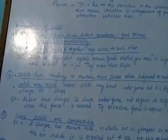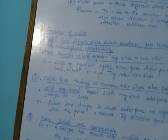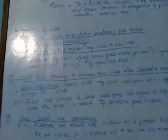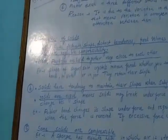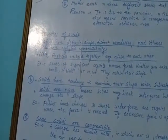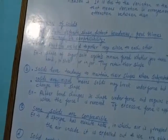Solids have definite shape, distinct boundaries, fixed volumes, and have negligible compressibility — they have very low compressibility. This is because the particles of solids are held together very close to each other.